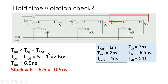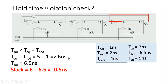For those who want to know more about hold time violation and this equation, I have created a separate video — the link will be in the description and in the info bar. Now, tcq plus t_NOT: tcq of the flip-flop is 5 nanoseconds, and t_NOT is the delay of the NOT gate, which is 1 nanosecond. So tcq + t_NOT = 5 + 1 = 6 nanoseconds.